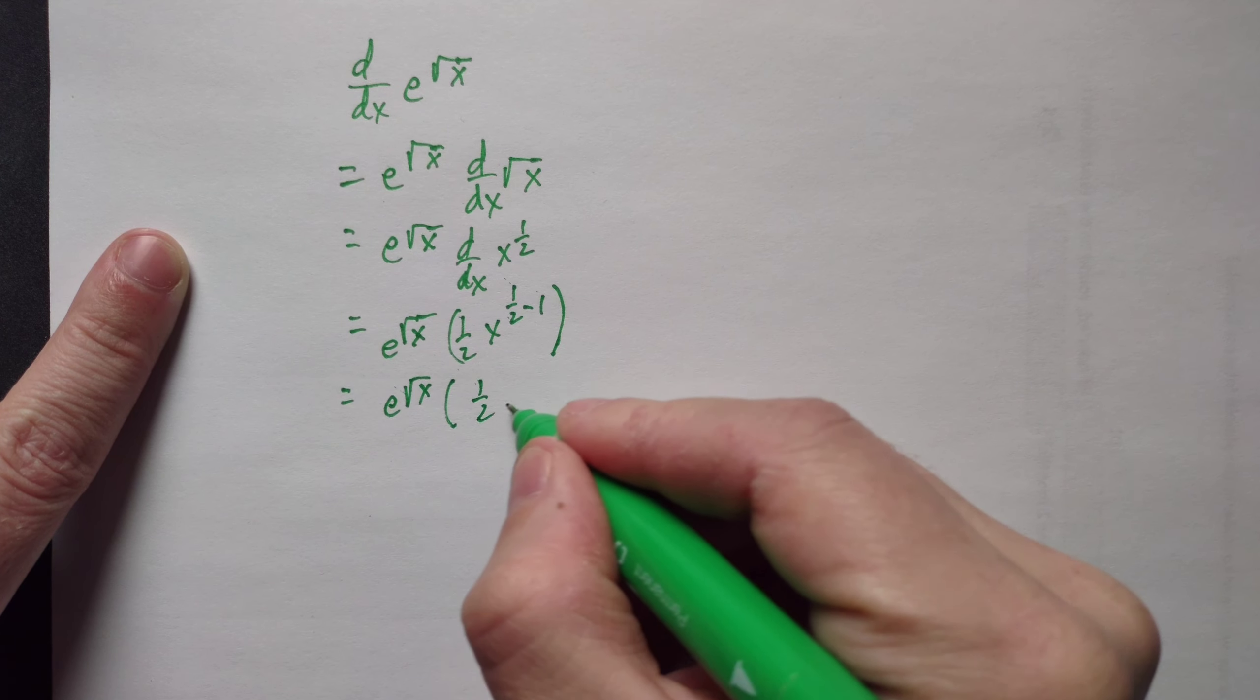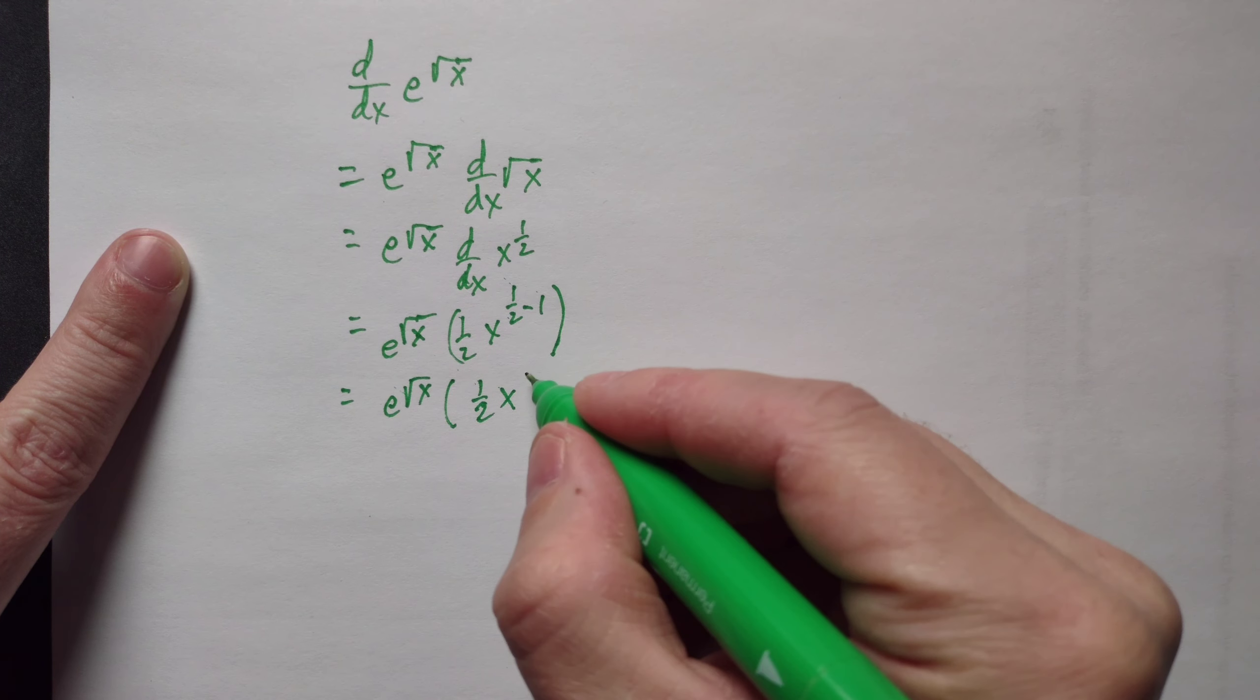So this is e to the root of x, you just copy that the entire time, and then often we rewrite this for ourselves as x to the 1 half.